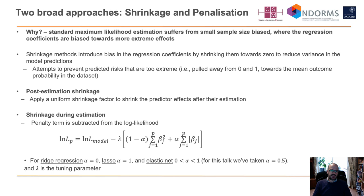There are two broad approaches for doing shrinkage. The first is post-estimation shrinkage — applying some uniform shrinkage factor to shrink the predictor effects after they've been estimated using standard maximum likelihood. Or we can do shrinkage during the estimation, which includes ridge regression, the lasso, and elastic net, where a penalty term is subtracted from the model log likelihood.